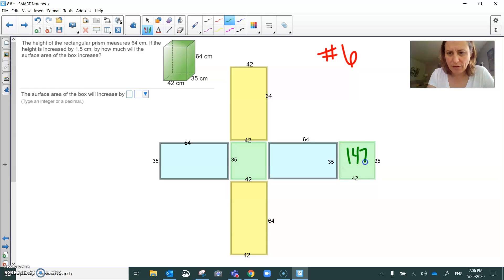1,470 centimeters squared. The blue sections are both 64 by 35 and that makes it 2,240 centimeters squared. 2,240 centimeters squared.